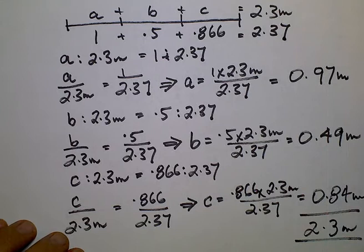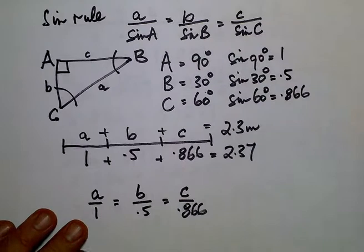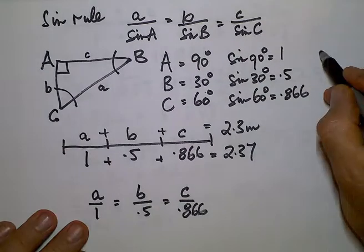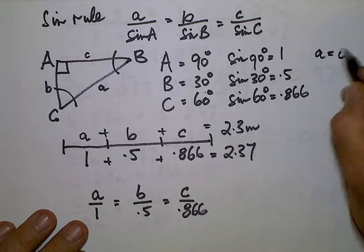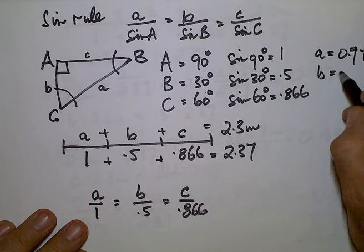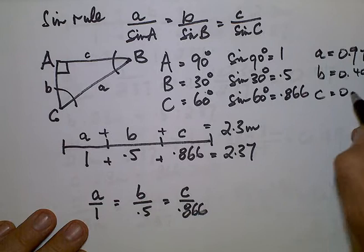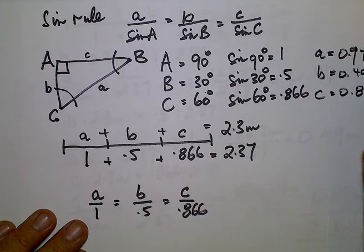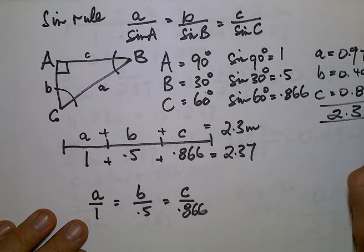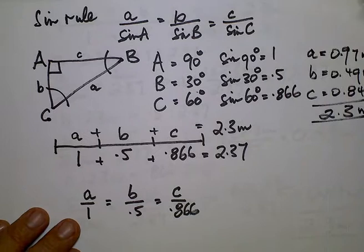We'll come back to the original sheet and write in our values there where A equals 0.97 metres, B equals 0.49 metres and C equals 0.84 metres totaling 2.3 metres. So that's a good application of the sine rule.